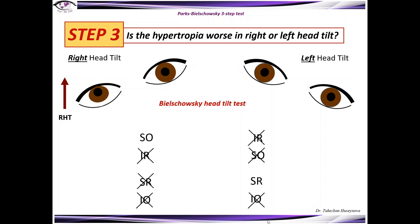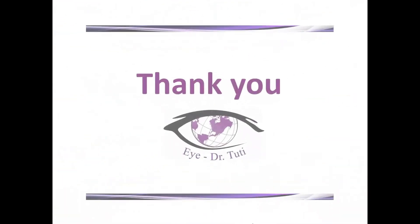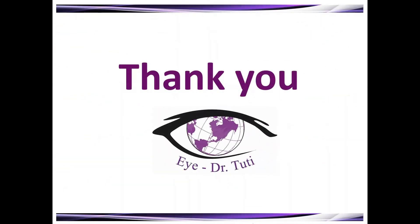This test will exclude the superior rectus muscle of the left eye, and now we have a defined weakness of the superior oblique muscle of the right eye. So the diagnosis is right superior oblique palsy. This was Park-Bielschowsky's three-step test. Thank you for watching — till the next video, stay positive, stay healthy.